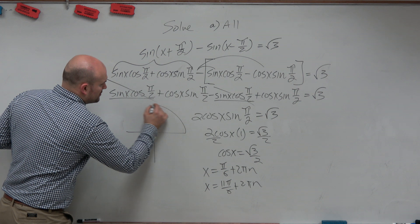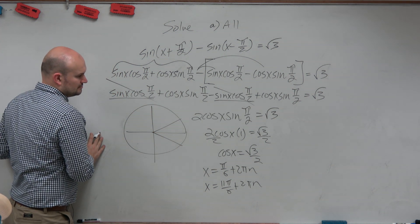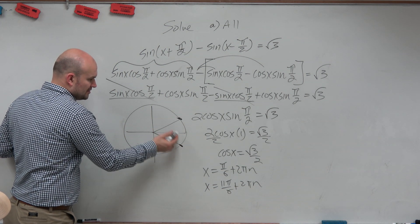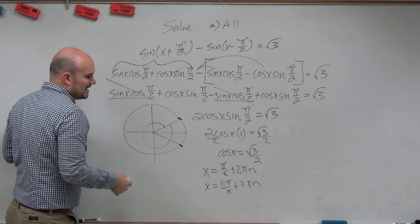Because cosine is equal to square root of 3 over 2 here and here. So here's your two solutions. The only way to keep on getting these solutions is I have to do a whole revolution, which would be adding 2π in.